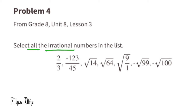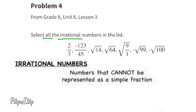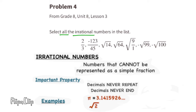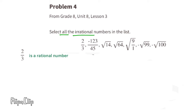Problem 4: Select all the irrational numbers in the list. Remember, irrational numbers are numbers that cannot be represented as a simple fraction. The term irrational means 'no ratio,' and as a decimal it would be a decimal that never ends and never repeats. Pi is an irrational number because written as a decimal it never ends and never repeats, and pi cannot be represented as a fraction. Another example of an irrational number is the square root of 2, which goes on forever without repeating.